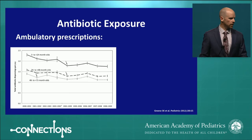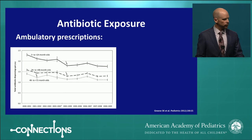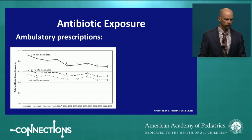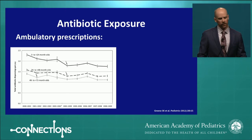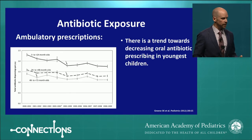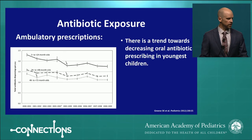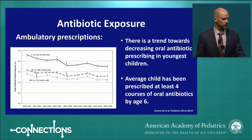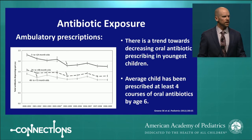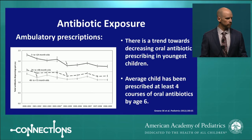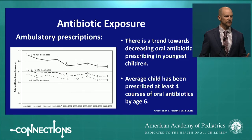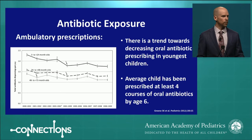This is a study looking at the Harvard Pilgrim experience with antibiotic prescriptions in Massachusetts from 2000 through 2009. The topmost curve represents antibiotic prescriptions to children aged three to 24 months — those children are receiving antibiotics at a much higher rate than other age groups. Gratifyingly, there is a trend towards decreasing oral antibiotic prescribing in our youngest children. However, the average child has been prescribed at least four courses of antibiotics by age six. There is a great amount of variation in prescribing patterns among industrialized nations and between states that does not correspond to any differences in prevalence of bacterial disease or morbidity outcomes.